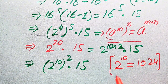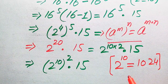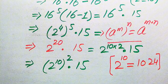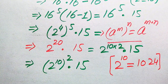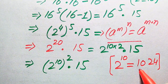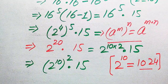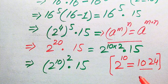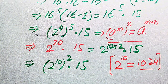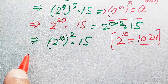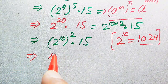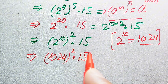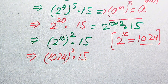You can easily get the value of 2 to the power of 10 without using the calculator — just multiply 2 by itself 10 times using the traditional method to get 1024. Now we replace this value, and the expression becomes 1024 squared, multiplied by 15. The next challenge is to find the square of this large number without a calculator.